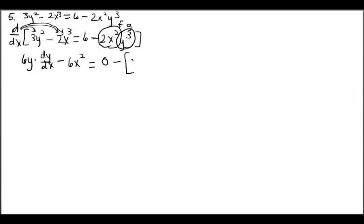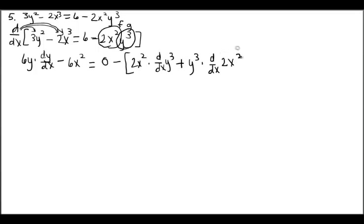Finding the derivative of minus 2x cubed results in 6x squared. Traveling across the equal sign, the derivative of the constant term is 0. I have a product of factors, and I'm going to build a bracket with the minus outside of it. I'll focus on this as my f factor and this as my g factor. Jumping into the product rule: the first factor times the derivative with respect to x of the second factor, plus the second factor, y cubed, times the derivative with respect to x of 2x squared. So we have 6y dy/dx minus 6x squared equals...